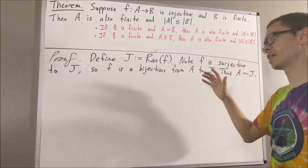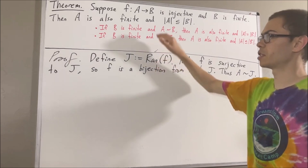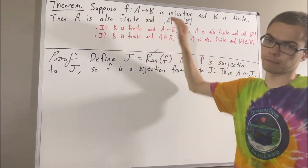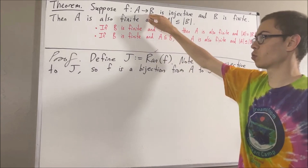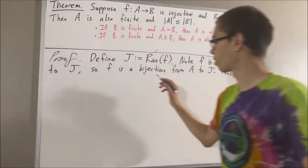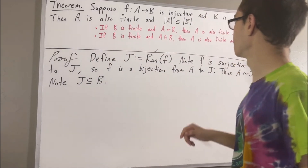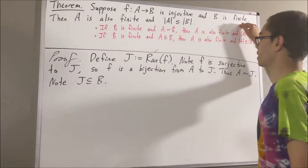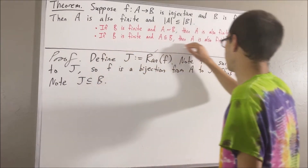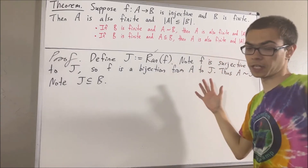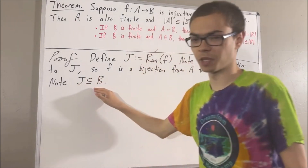Now we know that the range of F is a subset of the codomain of F. So the range of F is a subset of B, or in other words, J is a subset of B. Since B is finite and J is a subset of B, this second fact tells us that J is also finite, and the number of elements in J is less than or equal to the number of elements in B.